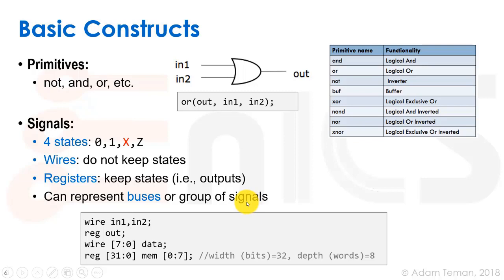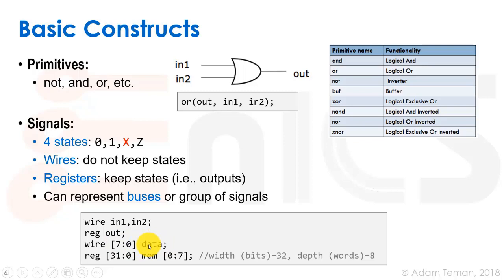Wires and registers can represent buses or groups of signals. Often we don't want to write 32 separate signals for a 32-bit bus, so we group them with square bracket notation. For a single bit: 'wire in1, in2;'. For a reg: 'reg out;'. For a bus of wires, we write 'wire [MSB:LSB] name', so 'wire [7:0] data' gives us data[0] through data[7] — an 8-bit number.